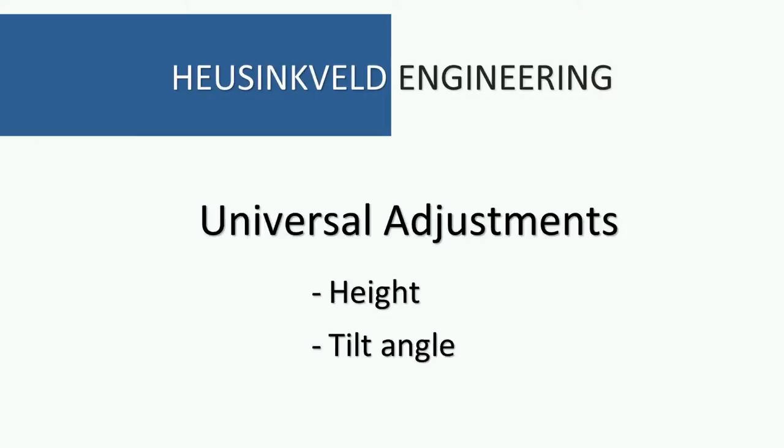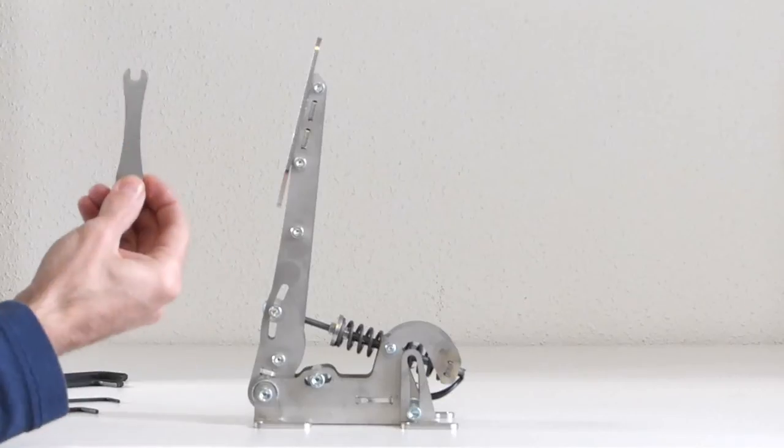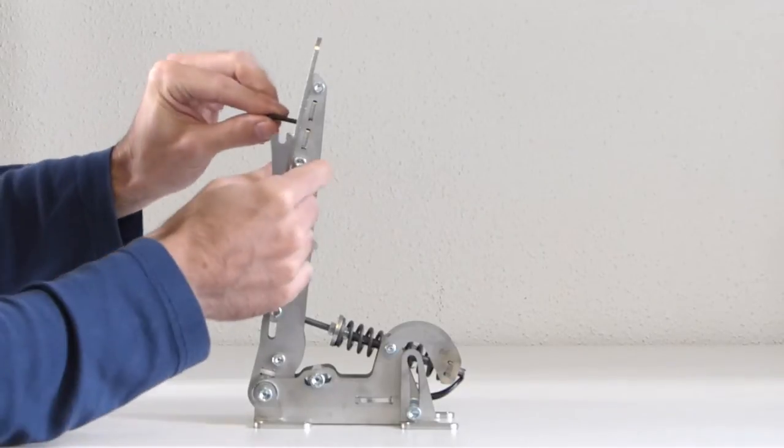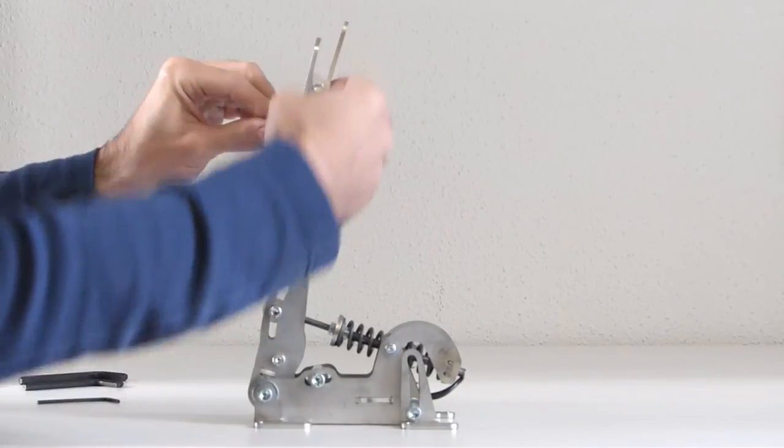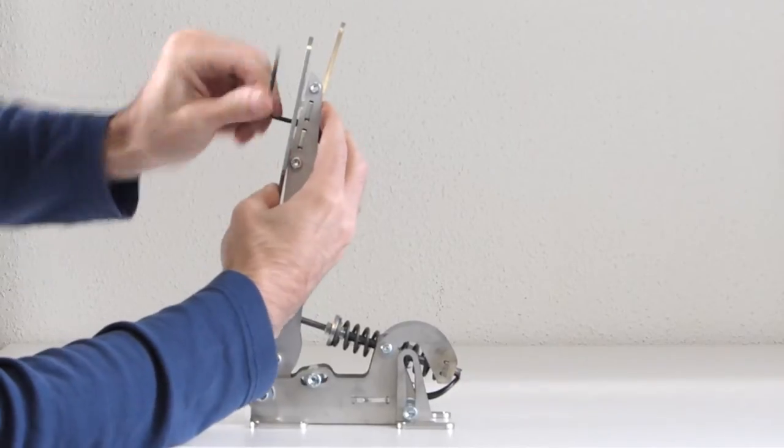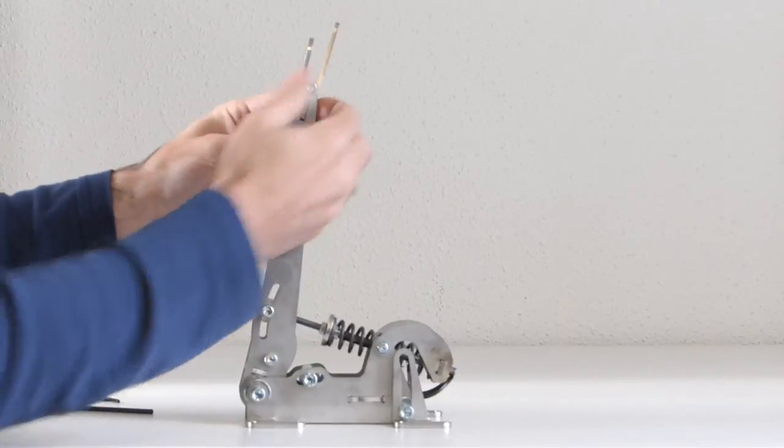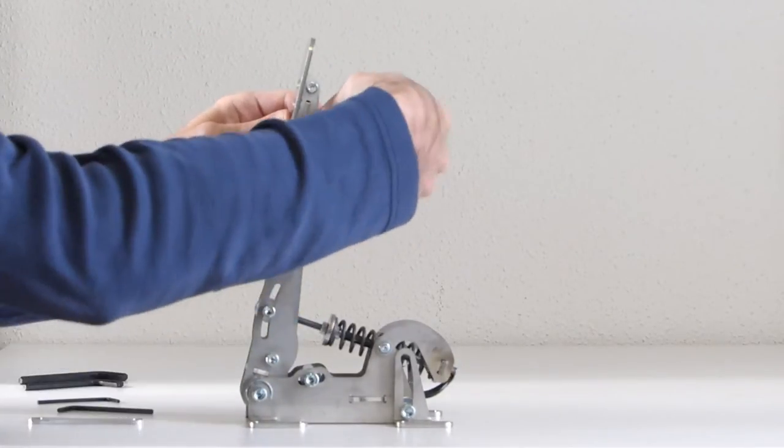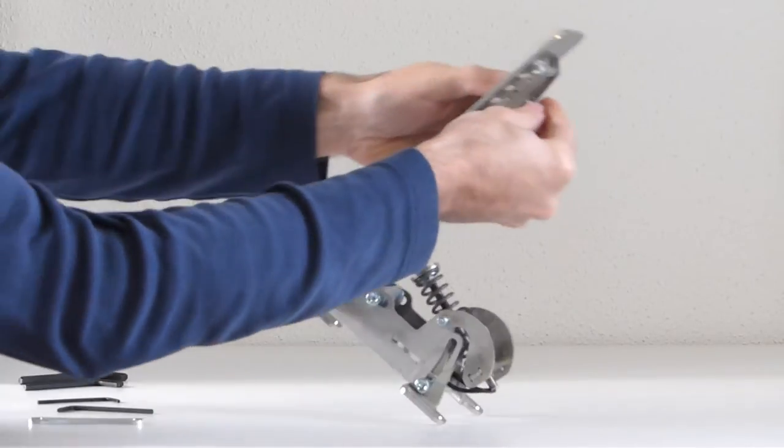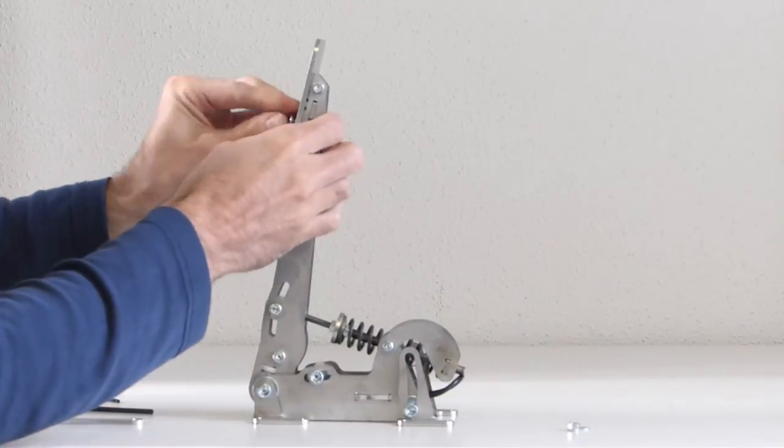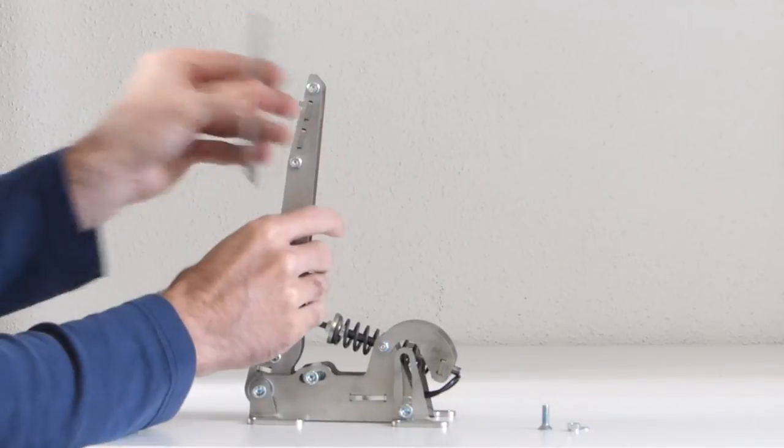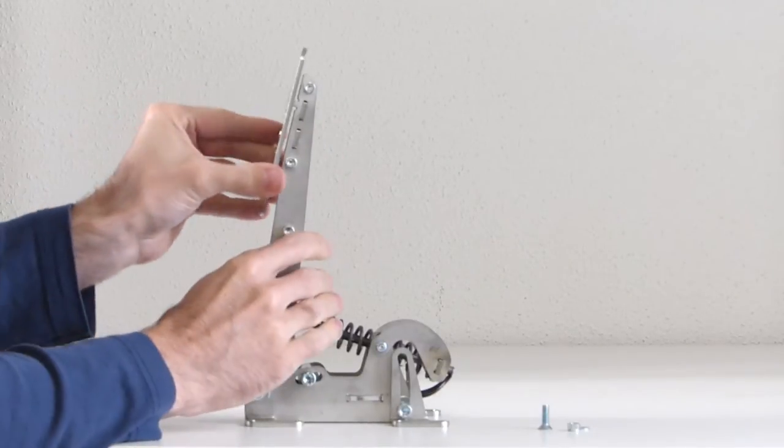Some adjustments apply to all pedals, the height of each pedal and the tilt angle of each pedal. I will show it now with the throttle. And there you need the wrench and the 3 mm Allen key. And then you undo the sunken bolt that holds the pedal pad in place. Make sure not to lose the washer and the nut. Leave them somewhere, take the bolt out and then you can take the pedal pad off.